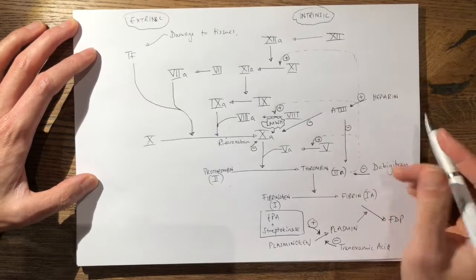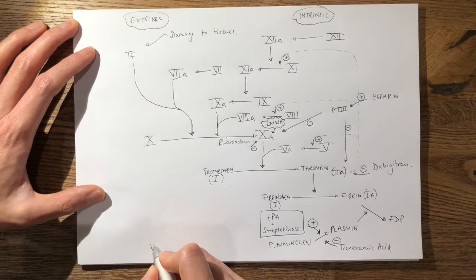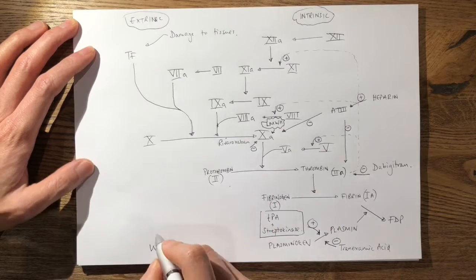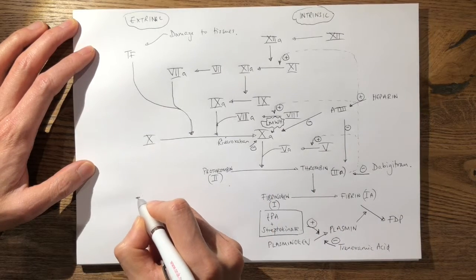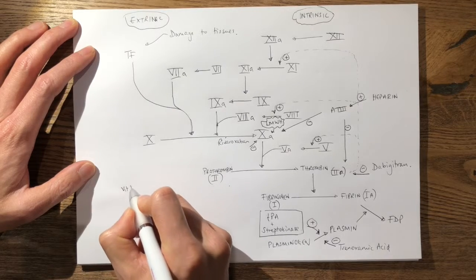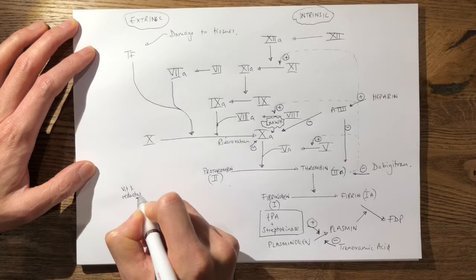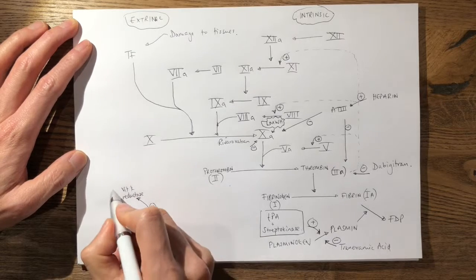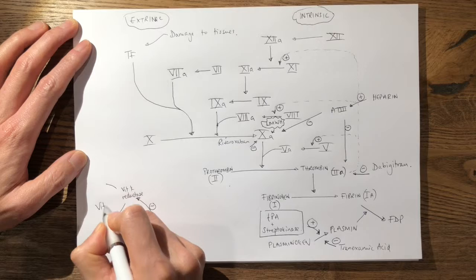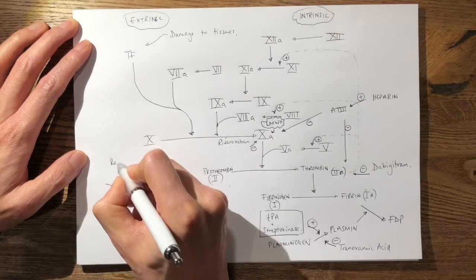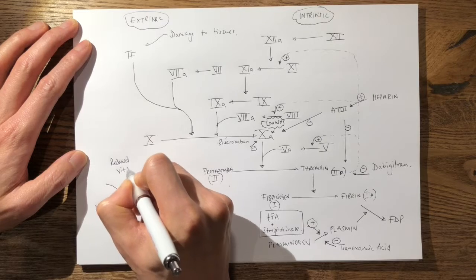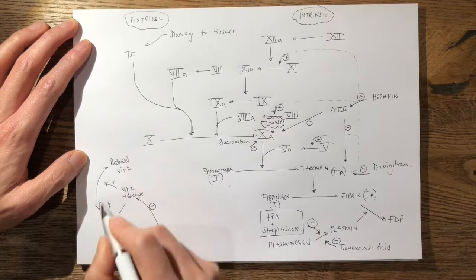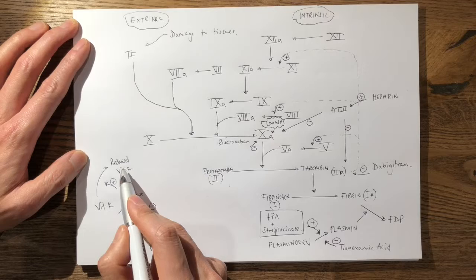Beyond that, you need to know how warfarin works. Warfarin is an inhibitor of vitamin K, but more specifically it actually inhibits vitamin K reductase. Vitamin K reductase is an enzyme, and it is essential for the reduction of vitamin K to reduced vitamin K. So vitamin K reductase helps this process of converting vitamin K to reduced vitamin K.